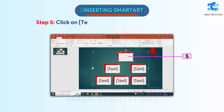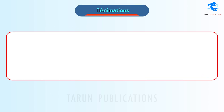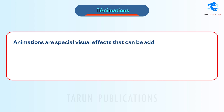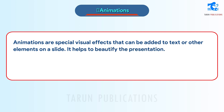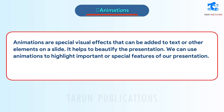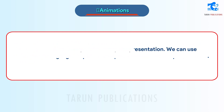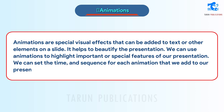Step 5: Click on text inside the shape to enter the text. Animations are special visual effects that can be added to text or other elements on a slide. They help to beautify the presentation. We can use animations to highlight important or special features of our presentation. We can set the time and sequence for each animation that we add.